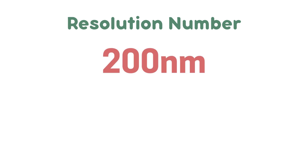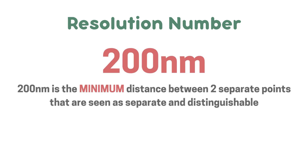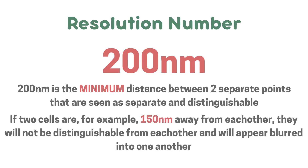Now we're going to go on to resolution number and what it actually means with an example. A microscope might have a resolution number of 200 nanometers. This essentially means that 200 nanometers is the minimum distance between two separate points that are seen as distinguishable from each other. If two cells are, for example, 150 nanometers away from each other, they will not be distinguishable and will appear blurred into one another, because 150 is lower than the minimum resolution of 200 nanometers.